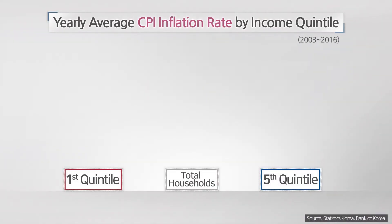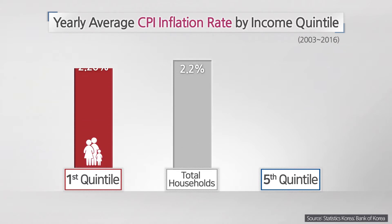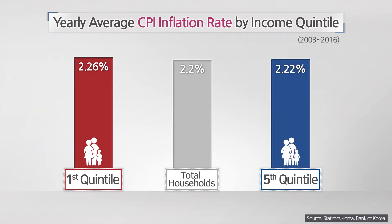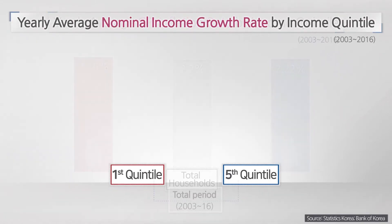A comparison of the yearly average CPI inflation rate by income quintile reveals that there was little change during the 13-year period, with total households averaging 2.2%, the lowest first income quintile at 2.26%, and the highest fifth income quintile at 2.22%.